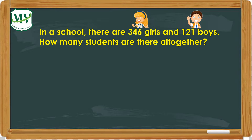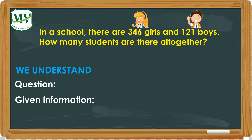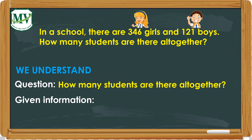Let's answer this word problem using the four steps. Step 1: We understand. In step 1, we will identify the question and given information. How many students are there all together? This is the question in the word problem.